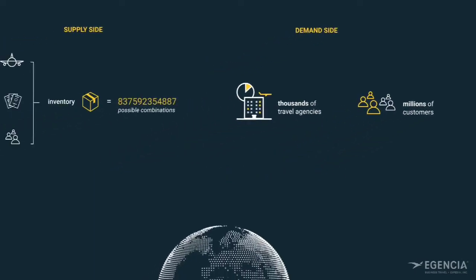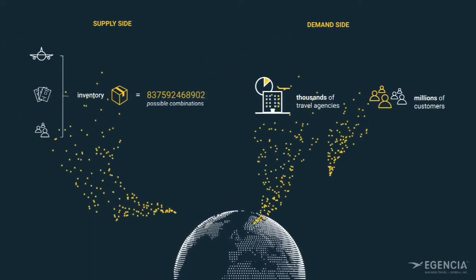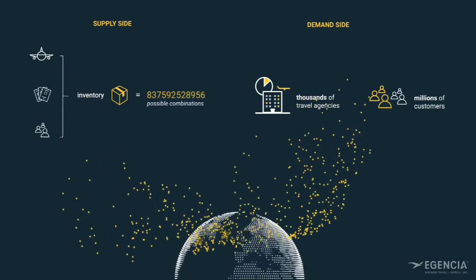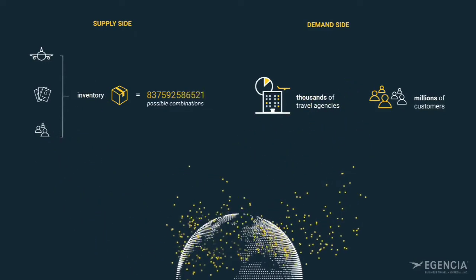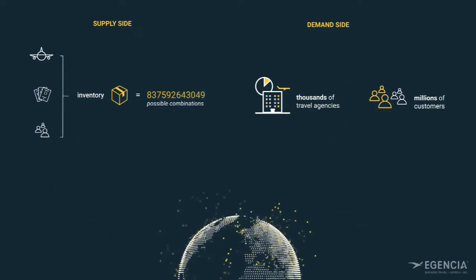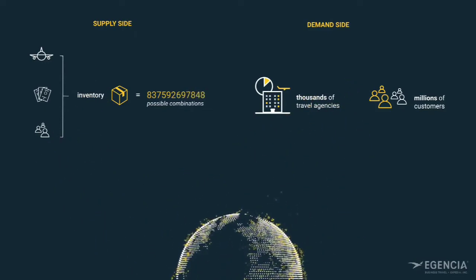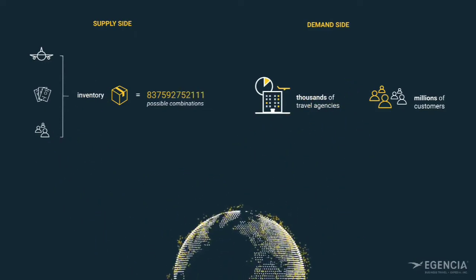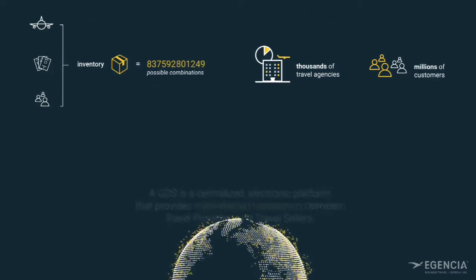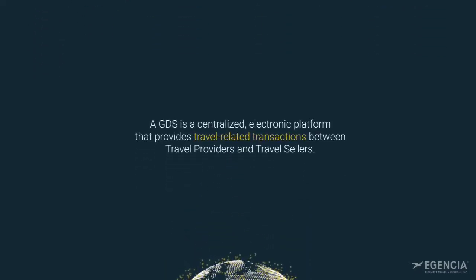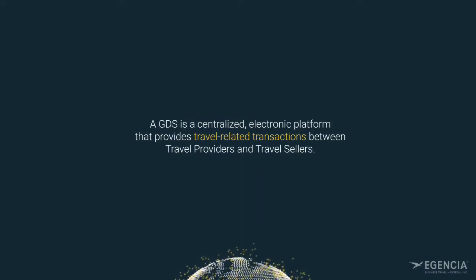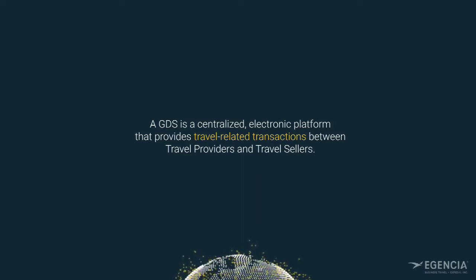Global Distribution Systems, or GDS, have to connect these vast volumes of supply and demand in an increasingly automated and fast way. A GDS is a centralized electronic platform that provides travel-related transactions between travel providers and travel sellers.